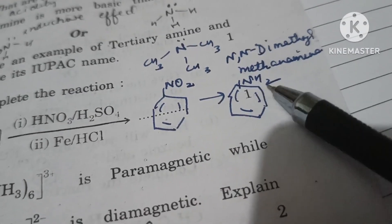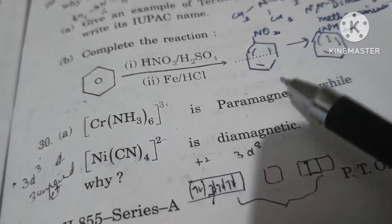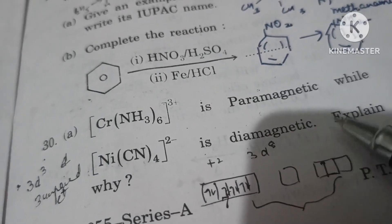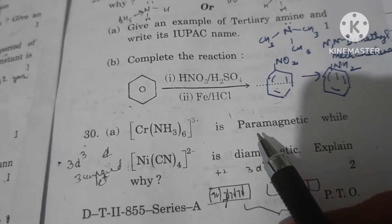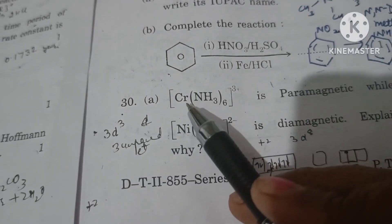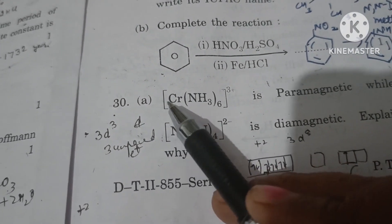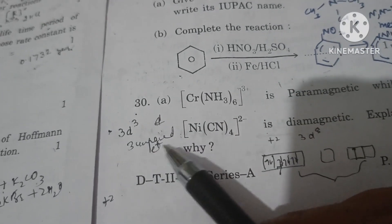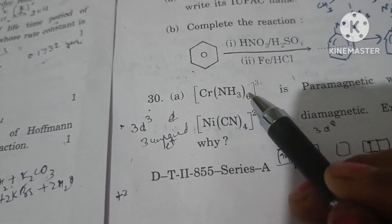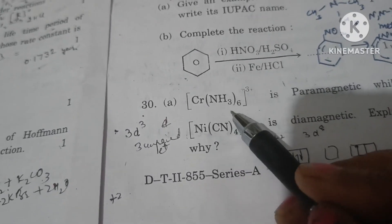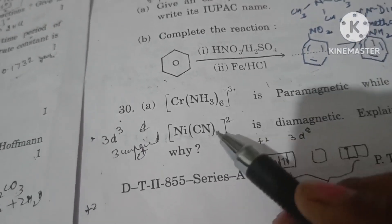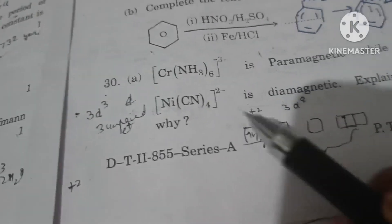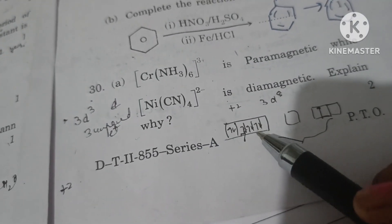Hexaamine chromium is paramagnetic while tetracyanidoferrate nickelate is diamagnetic. For hexaamine chromium: chromium (atomic number 24) has configuration 3d⁵ 4s¹; in +3 oxidation state it becomes 3d³, giving 3 unpaired electrons. It undergoes d²sp³ hybridization, and because of 3 unpaired electrons it is paramagnetic.